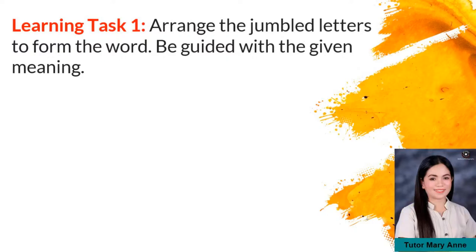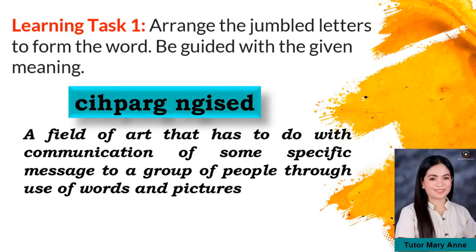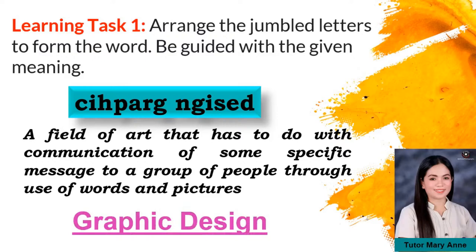For your learning task 1, arrange the jumbled letters to form the word. Be guided with the given meaning. Here are the jumbled letters — a field of art that has to do with the communication of some specific message to a group of people through use of words and pictures. What is your answer? The correct answer is graphic design.